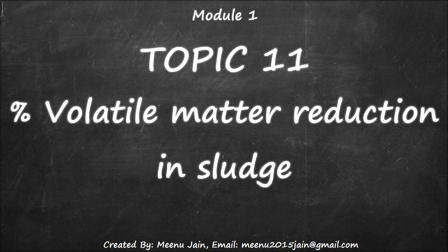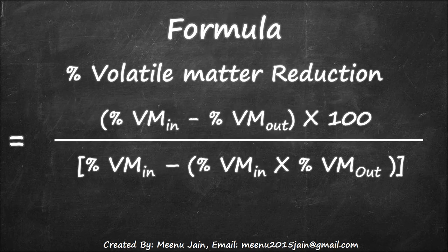The calculation used to determine percent volatile matter reduction is more complicated than the percentage removal because of the changes occurring during biosolids digestion. The formula for percent volatile matter reduction is: percent volatile matter at inlet minus percent volatile matter at outlet, multiplied by 100, divided by percent volatile matter in minus (percent volatile matter in multiplied by percent volatile matter out).